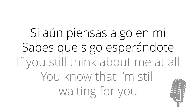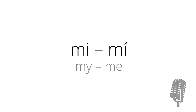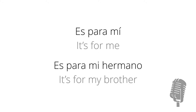Let me also take this opportunity to explain the difference between 'me' and 'mi'. 'Mi', spelt m-i with no accent, means 'my'. Whereas 'mí', spelt m-i with an accent on the i, means 'me'. For example, 'es para mí' means 'it's for me', whereas 'es para mi hermano' means 'it's for my brother'. So 'mí' with an accent means 'me', and 'mi' with no accent means 'my'.